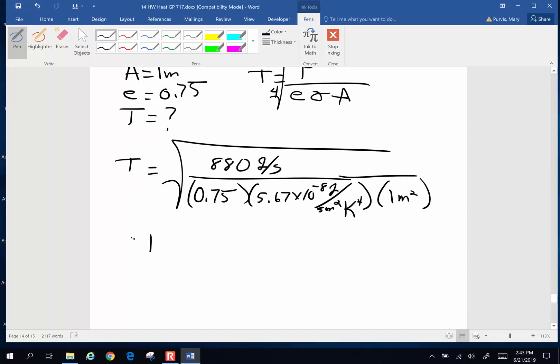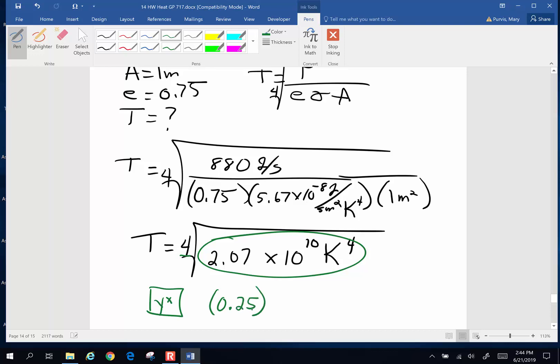I ended up with, before I take the fourth root of this, I end up with 2.04 times 10 to the tenth Kelvin to the fourth power. How do you fourth root? I would type in this number. Then I would hit the Y to the X button. And taking the fourth root is the same as raising something to the one-quarter power or 0.25. And when I did that, I ended up with 379 Kelvin.